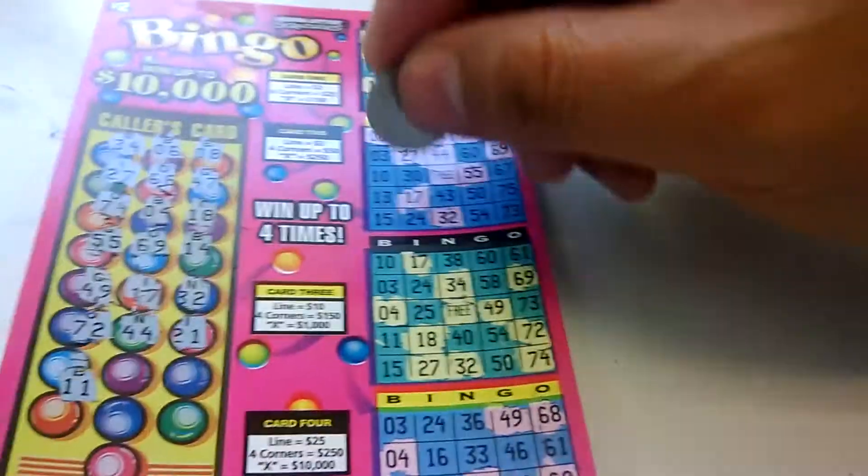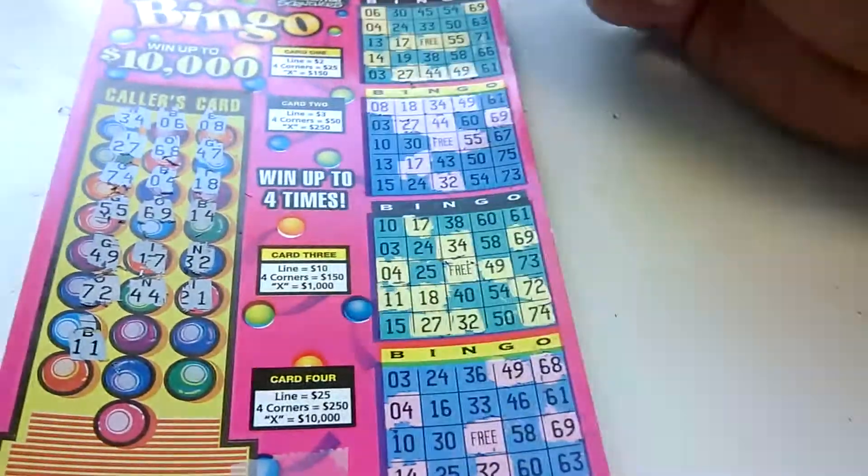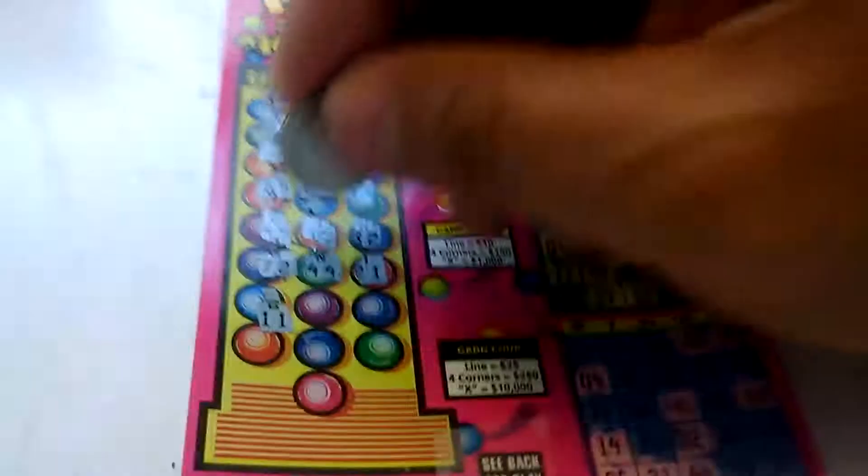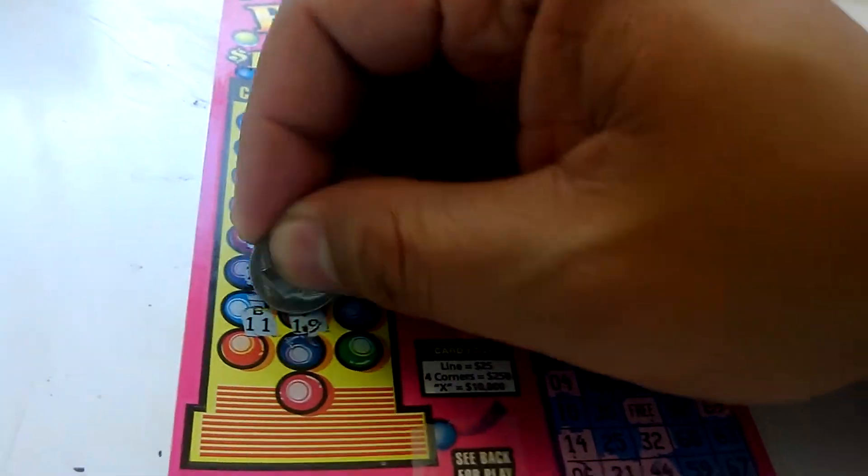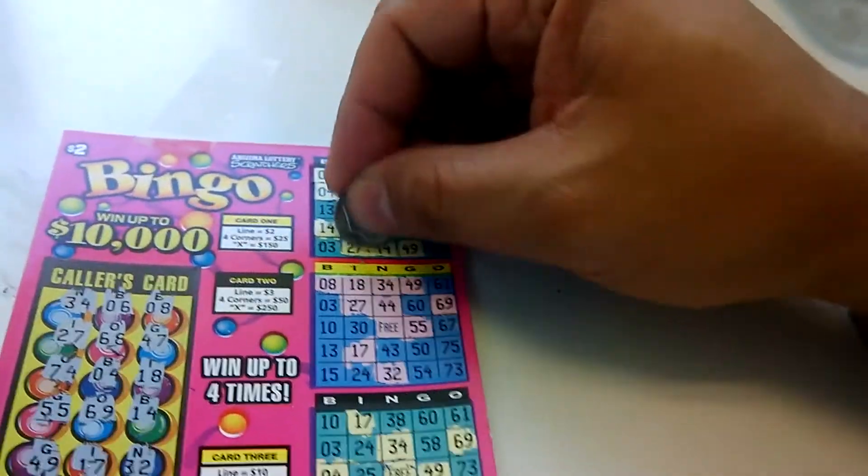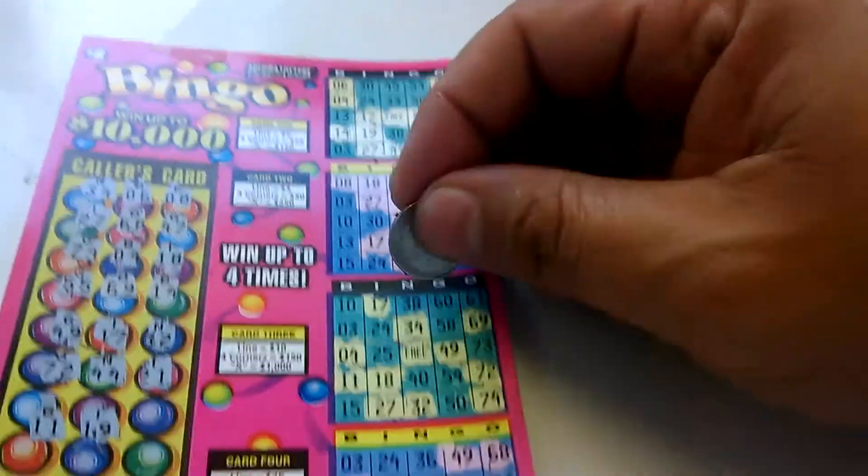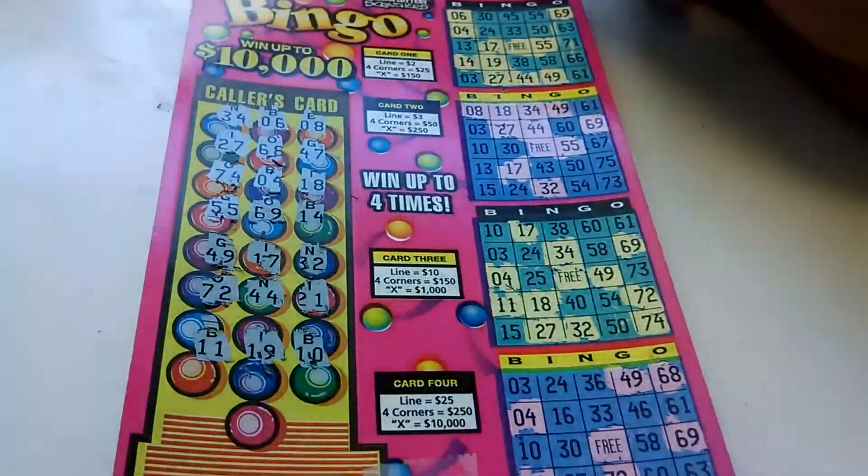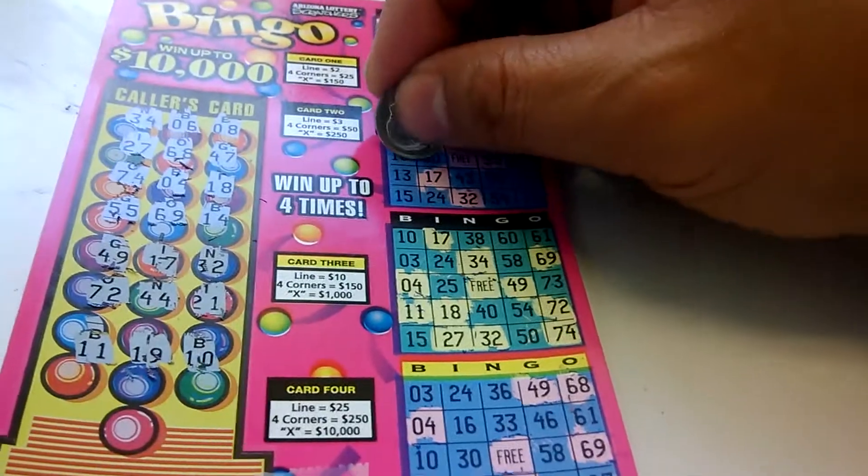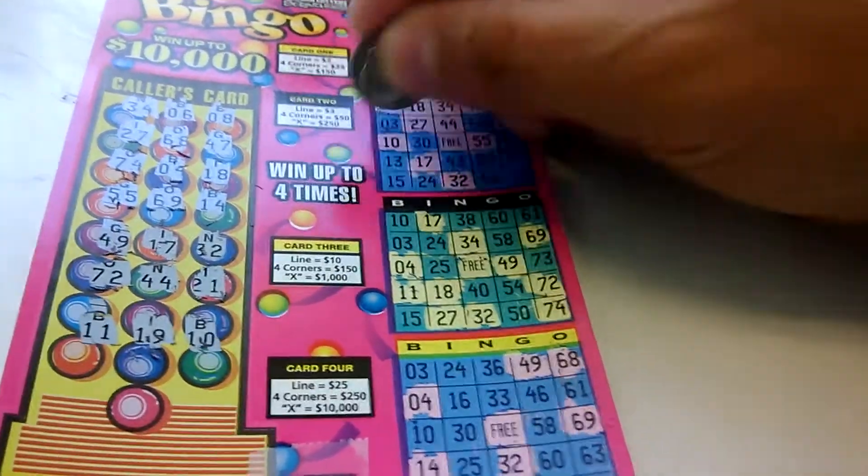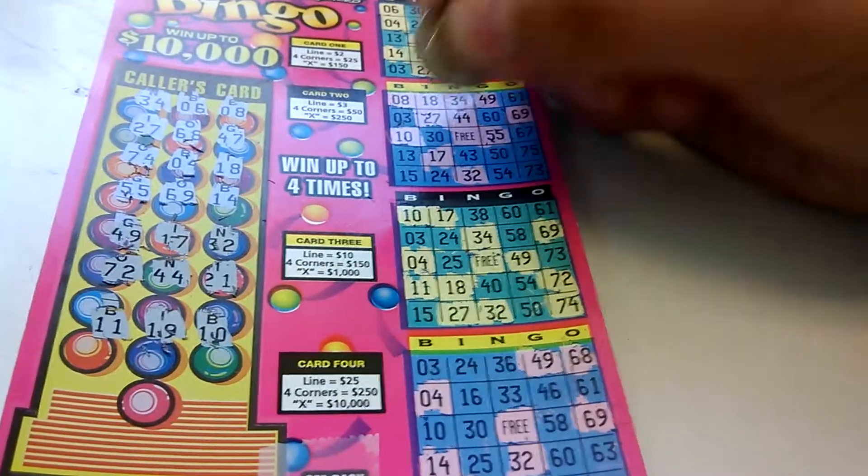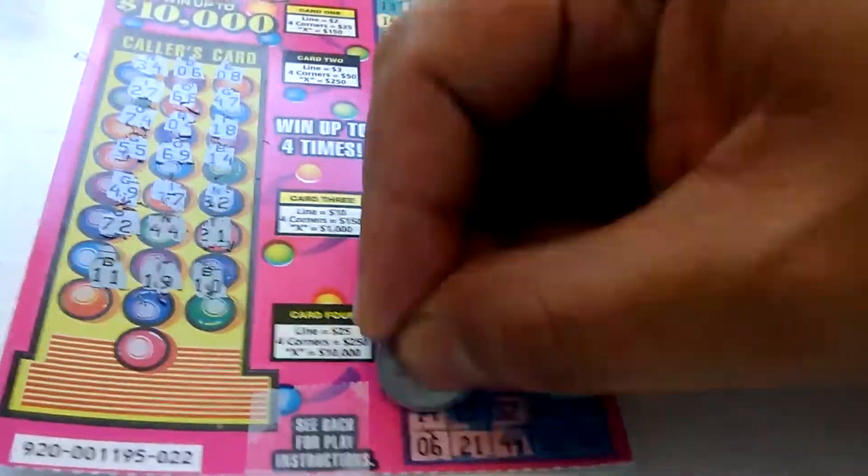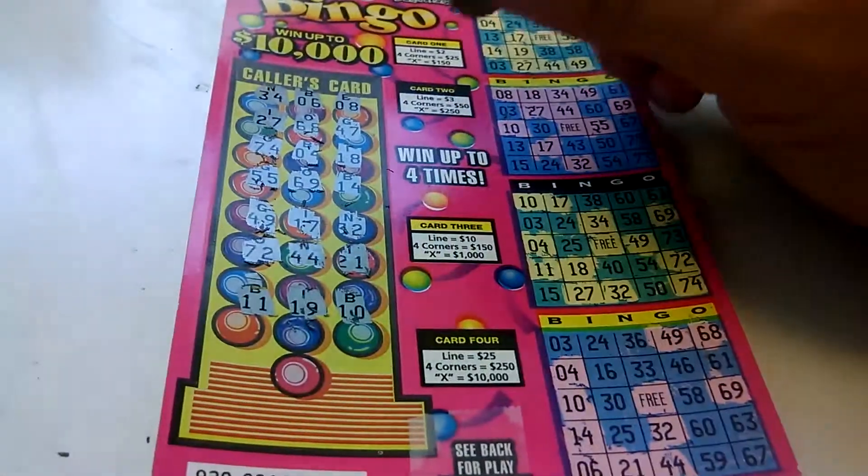B11. One B11. I19. We got one right here. That's it. B10. One B10. Two B10s. And three B10. We need a B3 now.